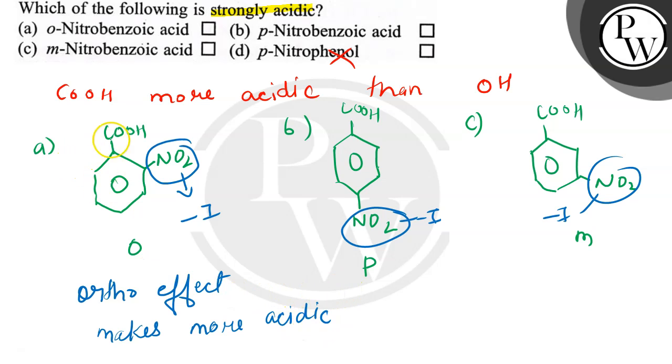So this ortho-nitrobenzoic acid will be the most acidic. So the correct option will be option a. Thank you.